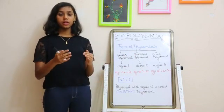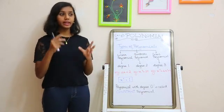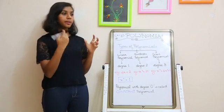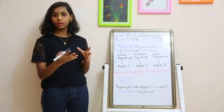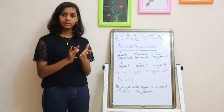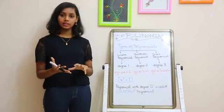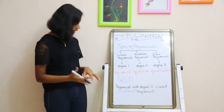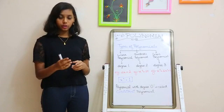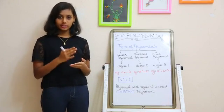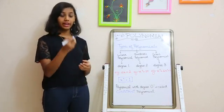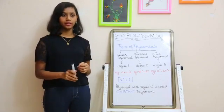What if the value of the power comes as 0? Like x raised to 0 — a polynomial with degree 0 will be a constant polynomial. That is because x raised to 0 is equal to 1.